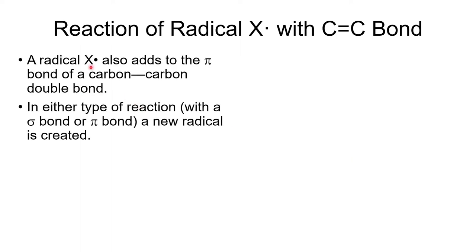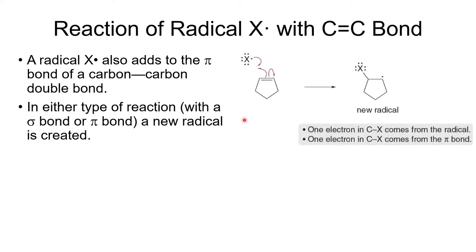Second, a radical can add to a pi bond — a carbon–carbon double bond. The radical forms a new bond to one carbon of the double bond, and the other electron from the pi bond moves to the adjacent carbon, creating a new carbon radical. In both sigma-bond abstraction and pi-bond addition, we consume one radical and generate a new one.